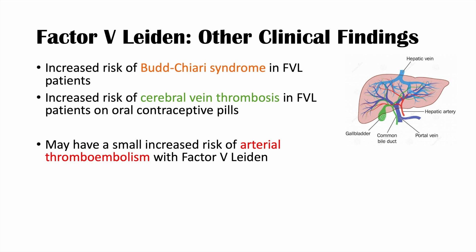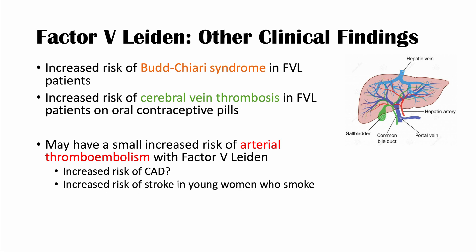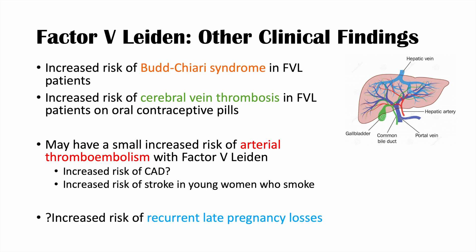Arterial thromboembolism can include increased risk of coronary artery disease and stroke, particularly in young women who smoke and have this condition. There is also the question of whether Factor V Leiden increases the risk of recurrent late pregnancy losses — a complication more commonly associated with antiphospholipid antibody syndrome. Because of the increased risk of clot formation, clots can enter placental vessels and lead to pregnancy losses, and some evidence suggests Factor V Leiden may contribute to late pregnancy losses.